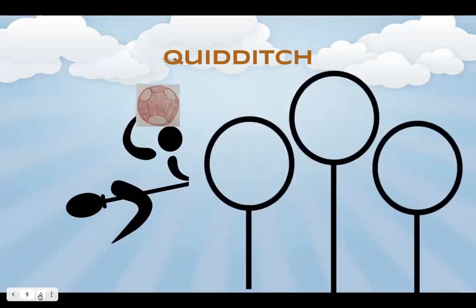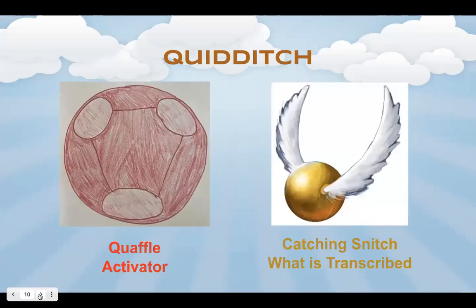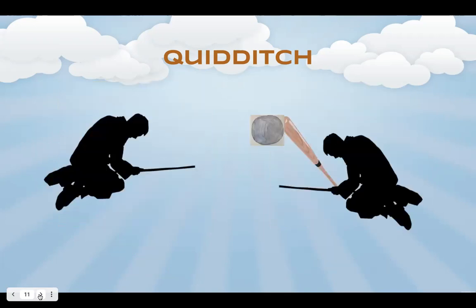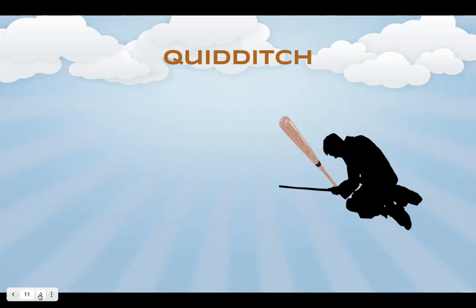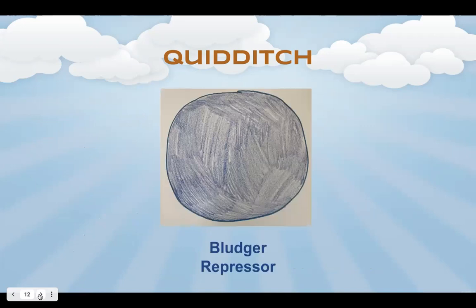So how does the team even get these points to begin with? Via a chaser throwing a ball called the Quaffle successfully through a goal, which leads to more pressure of wanting to catch the snitch and win the game. So the Quaffle in this case serves as the activator, and the seeker catching the snitch and winning the game is what is being transcribed. But if any player gets hit with a ball called the bludger from the opposing team's beater, that initial team gets closer to losing because they are not able to score enough points to win. So the bludger is acting like the repressor.